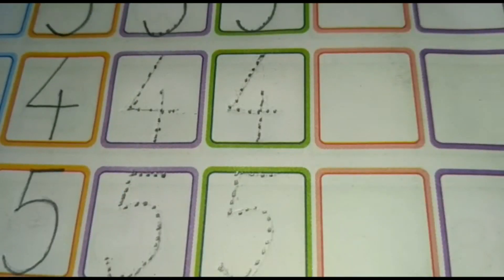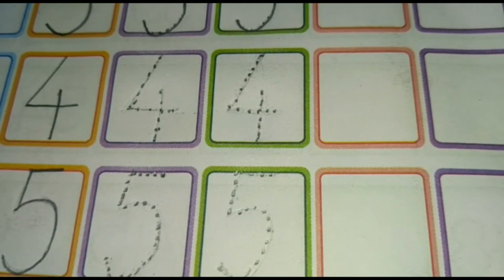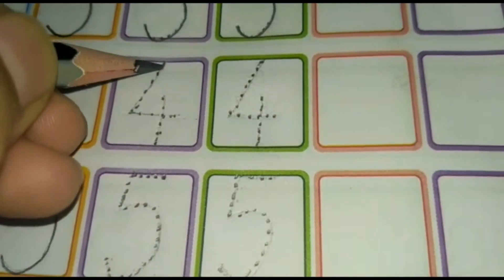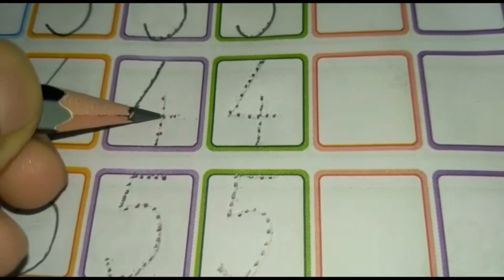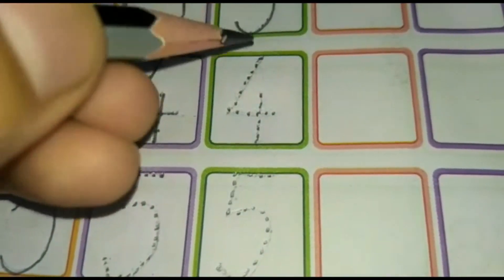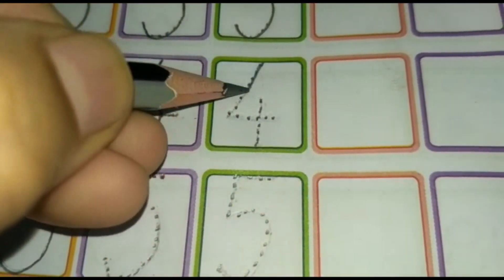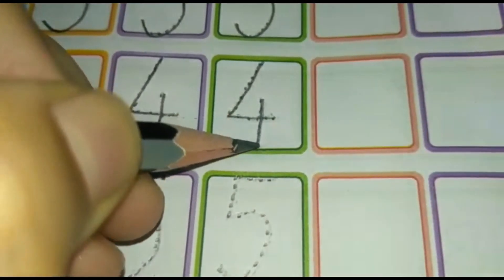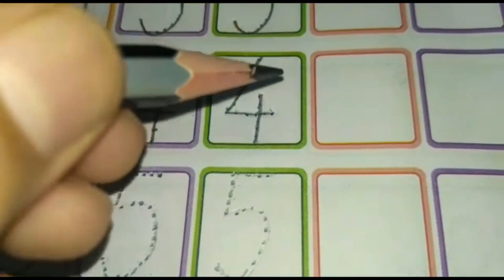So, what's the next number? Very good. It's four. Let's learn how to write the number four. One slanting line, one sleeping line and one standing line. One more time. A slanting line, a sleeping line and a standing line makes the number four.